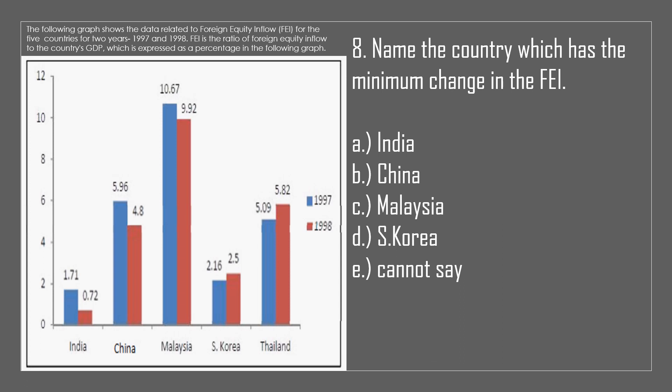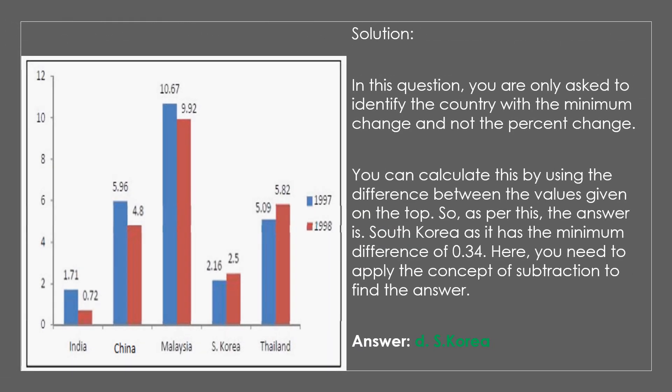Question 8. Name the country which has the minimum change in FEI. A. India. B. China. C. Malaysia. D. South Korea. E. Cannot say. The answer is D, South Korea. In this question you are only asked to identify the country with the minimum change, not the percent change. You can calculate this by using the difference between the values given. South Korea has the minimum difference of 0.34. You need to apply the concept of subtraction to find the answer.